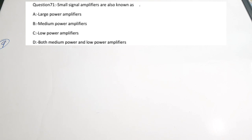The ninth question: small signal amplifiers are also known as — dash. Options: A) large power amplifier, B) medium power amplifier, C) low power amplifier, D) both medium and low power amplifier. Small signal amplifiers are also called low power amplifiers. The correct answer is C.